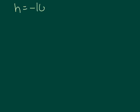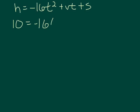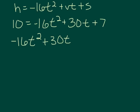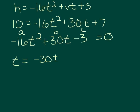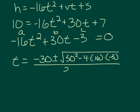So h = -16t² + vt + s. Our height is 10 feet at the basket, we don't know t, the initial velocity is 30, and the starting height is 7. We now have a quadratic that we need to solve, and to solve a quadratic it has to equal 0, so we subtract the 10 and get 7 minus 10 which is negative 3. Then we take a = -16, b = 30, c = -3 and plug them into the quadratic formula: t equals negative 30 plus or minus the square root of 30² minus 4 times -16 times -3, all over 2 times -16.